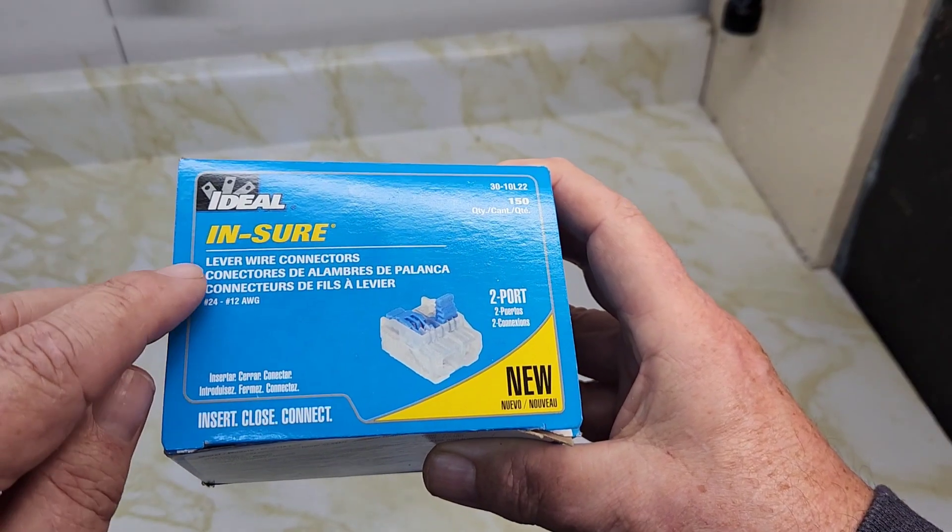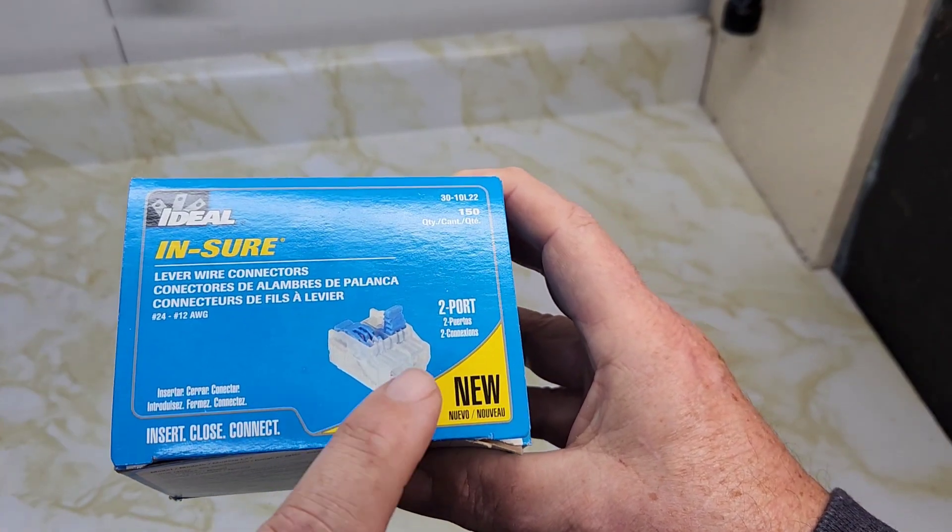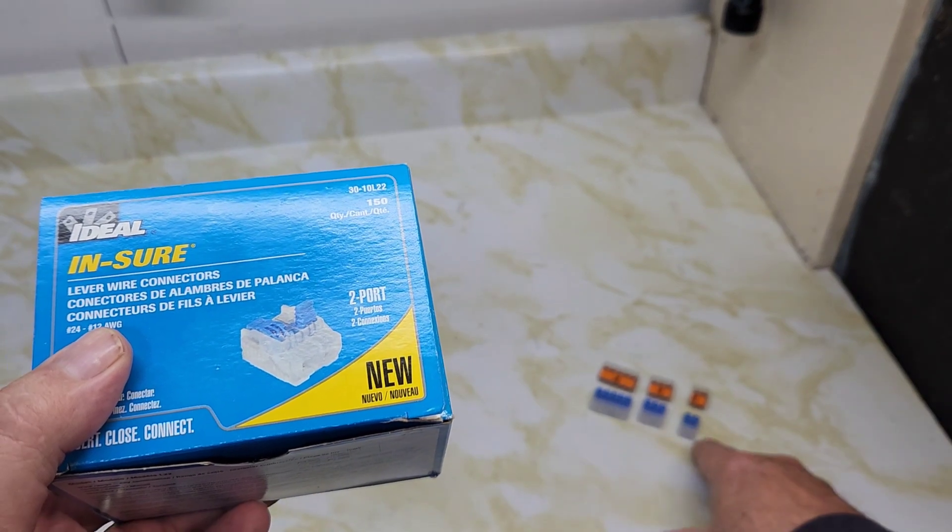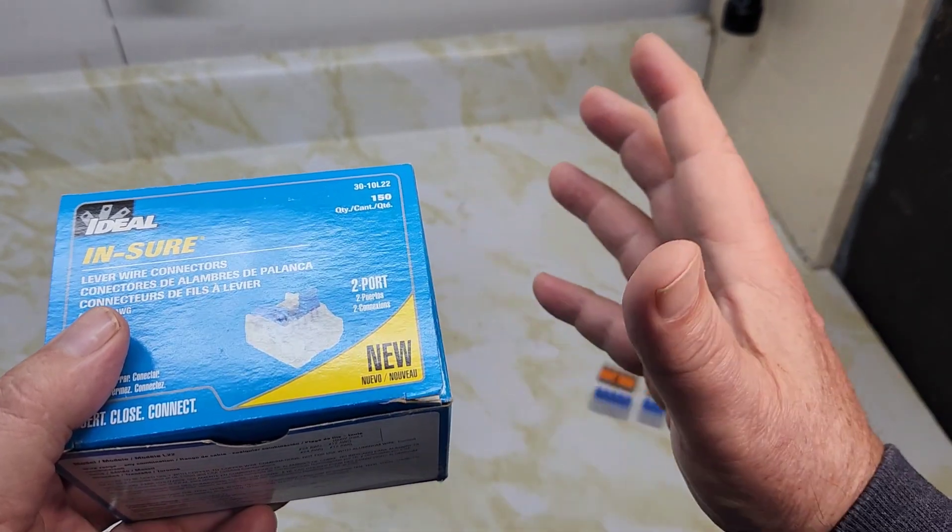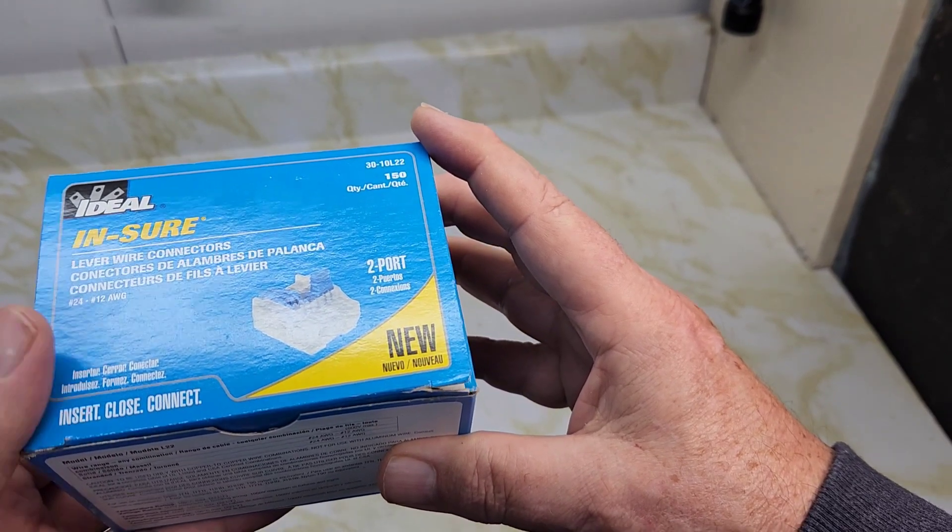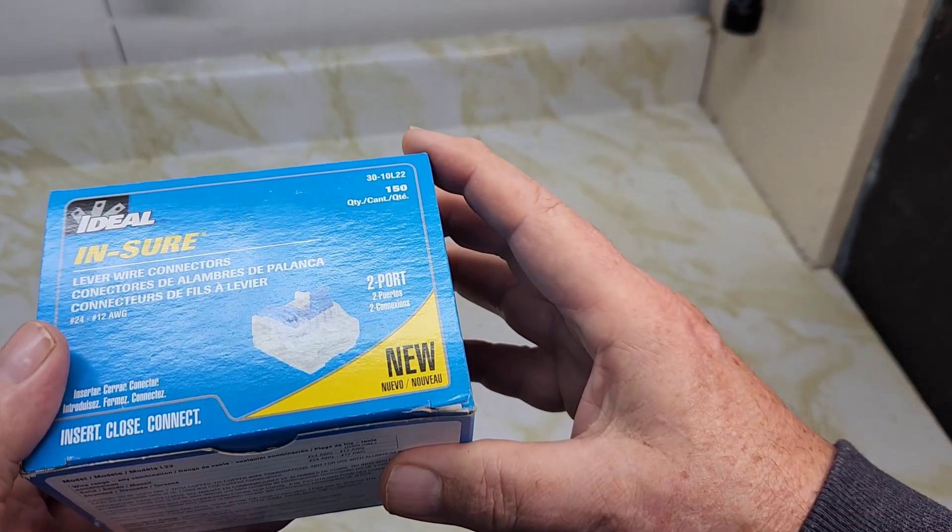This is our Ideal Interleaver wire connectors. This is the two port - it comes in five port, three port, and two port. Bought these off Amazon, cost me twenty dollars to ship it, and I'll leave a link to a different place where they were shipped from that was close to me here in Canada.